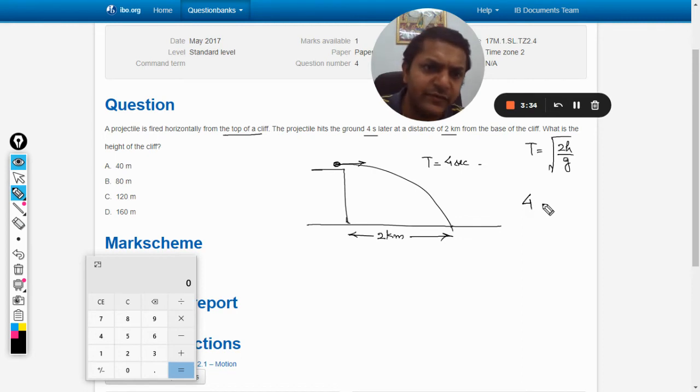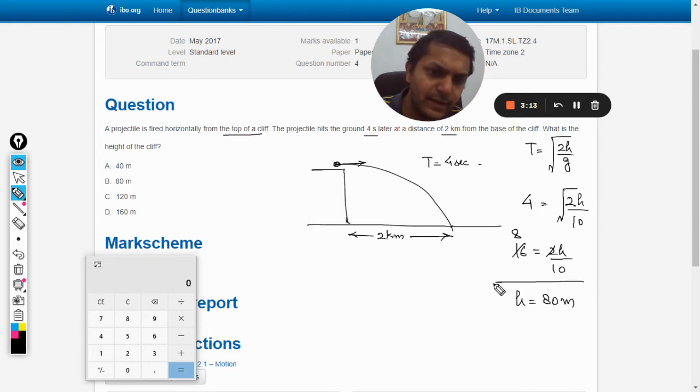So the time period will be 4 = sqrt(2h/g). g can be taken as 10, so 4 = sqrt(2h/10), which gives 16 = 2h/10, therefore h will be 80 meters. So there is the answer.